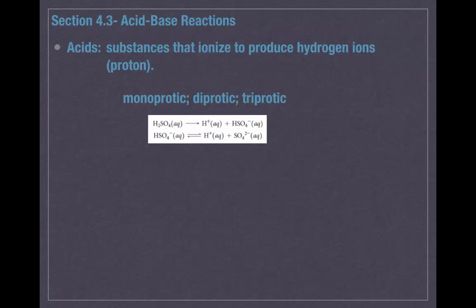Notice that sulfuric acid has a single arrow in the right direction, while the second dissociation has a double arrow. That means sulfuric acid is a strong electrolyte, while the second one is a weak electrolyte. We'll look at what that means for acids in just a moment, but we already studied strong and weak electrolytes previously.